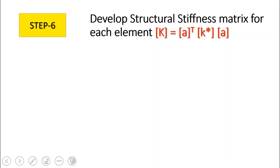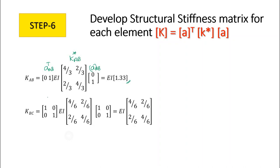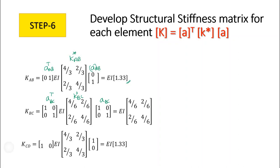Step 6 is to develop the structural stiffness matrix for each element using K = A-transpose times K-star times A. For AB: K_AB equals A_AB-transpose times K-star_AB times A_AB, giving 1.33 EI. For BC, multiplying the corresponding matrices gives the structural stiffness matrix for BC. For CD, the result is also 1.33 EI.